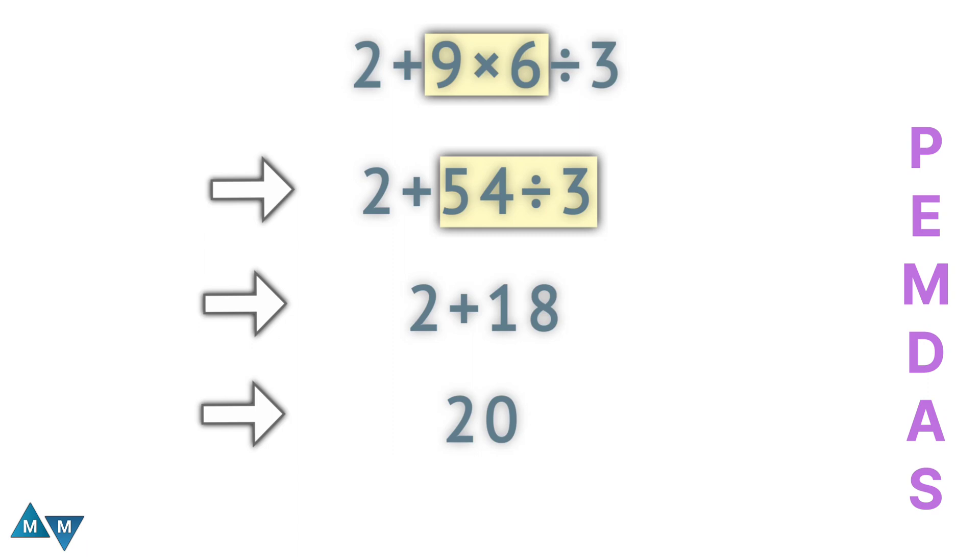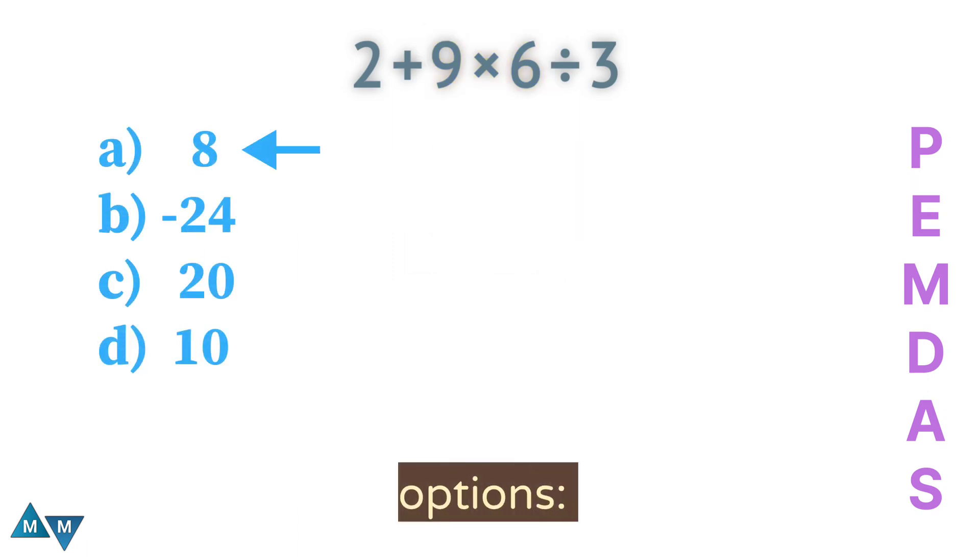Look at the options. The first one, 8, is incorrect. The second one is minus 24, which is also incorrect because our answer is a positive number. The third one is 20, so option C will be our final answer.